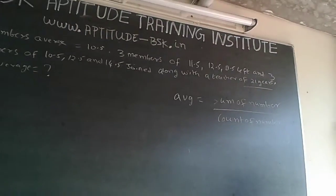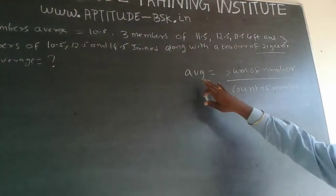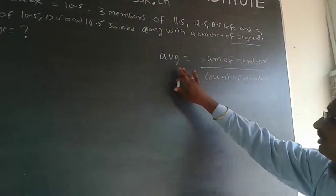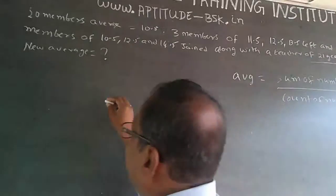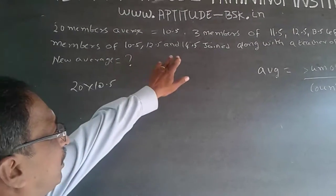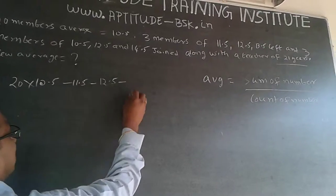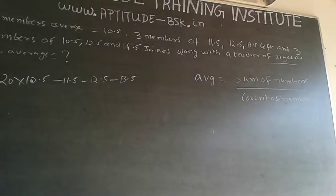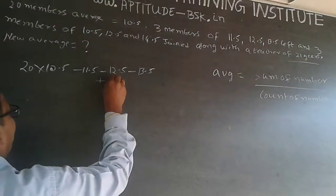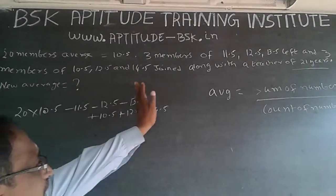So here, there are totally 20 members, 20 students are already there. Count will be 20, average is 10.5. So when you multiply this into this, you will get sum of numbers. So 20 into 10.5. Then 3 members of 11.5, so minus 11.5, minus 12.5, minus 13.5 have left. Now 3 people are coming in, so I have to add those: plus 10.5, plus 12.5, plus 14.5, and then they are joining along with the teacher, plus 21.